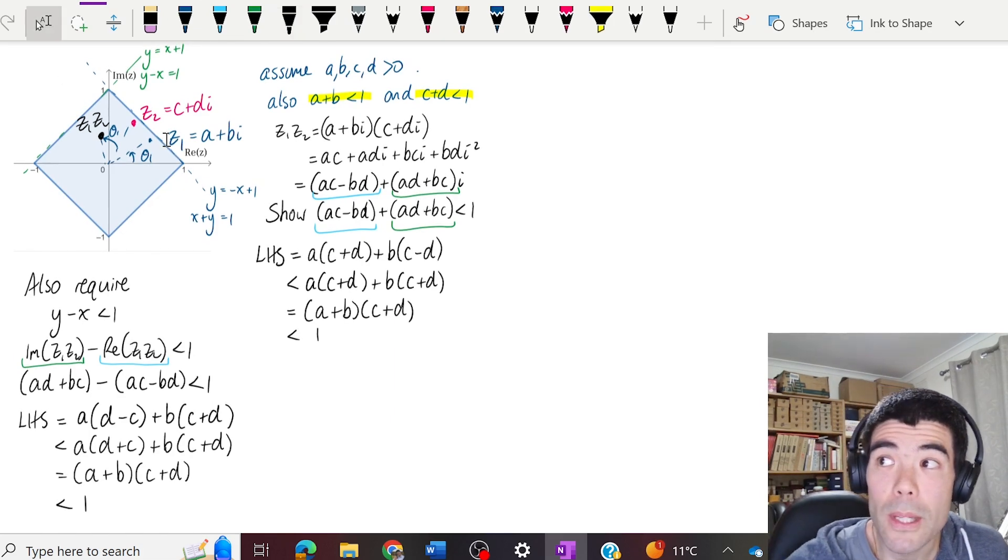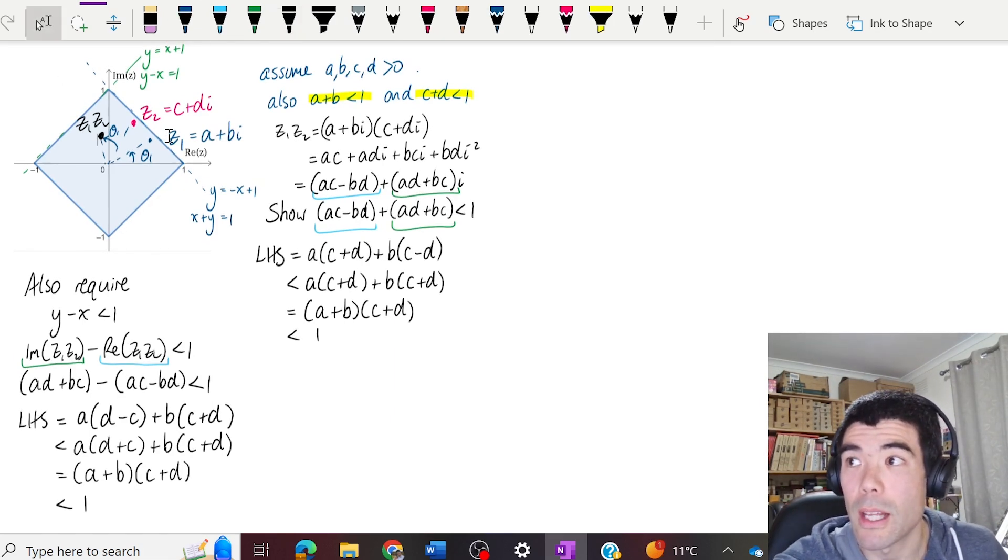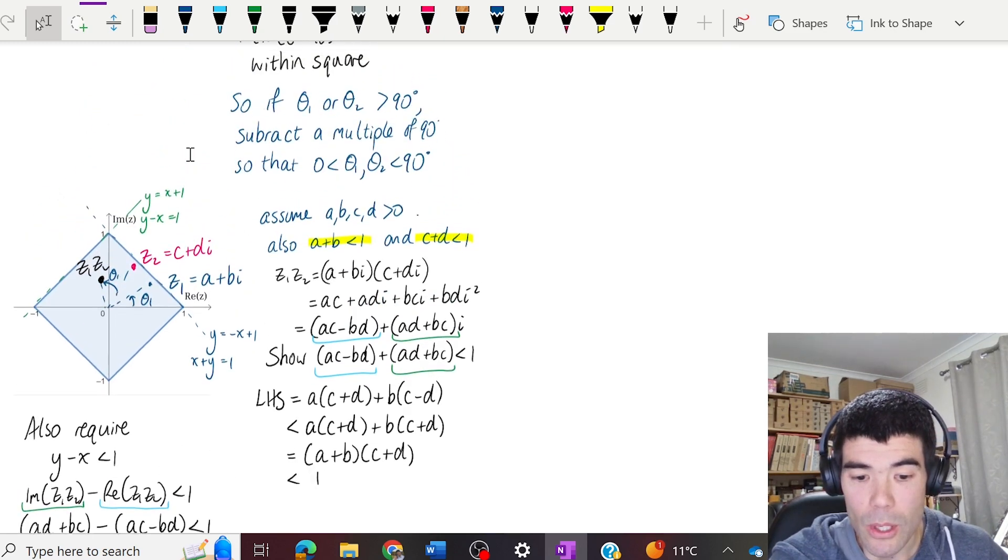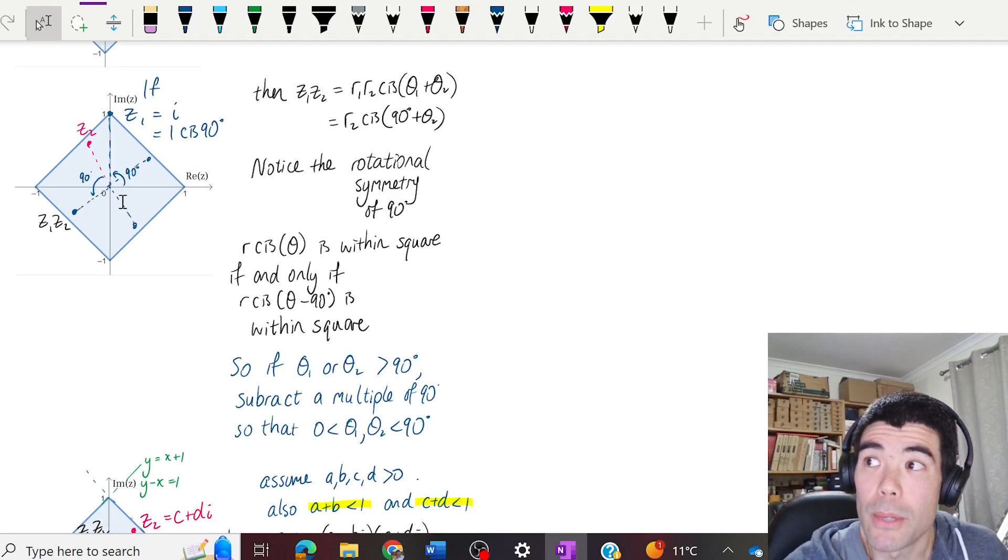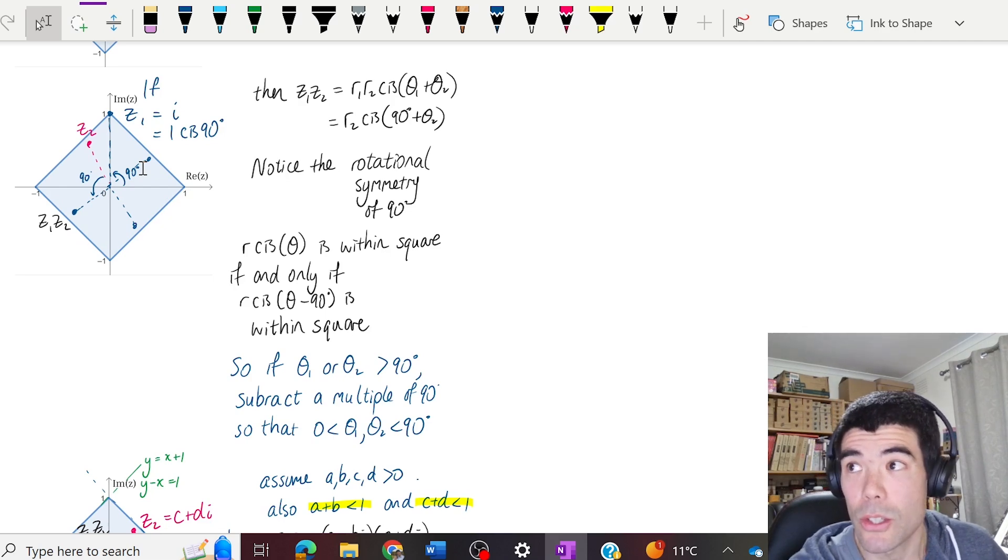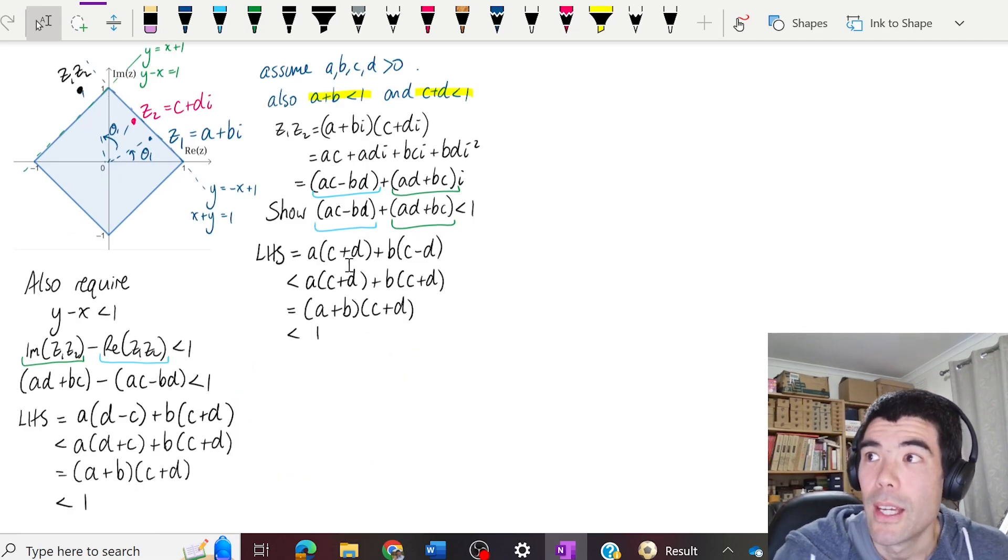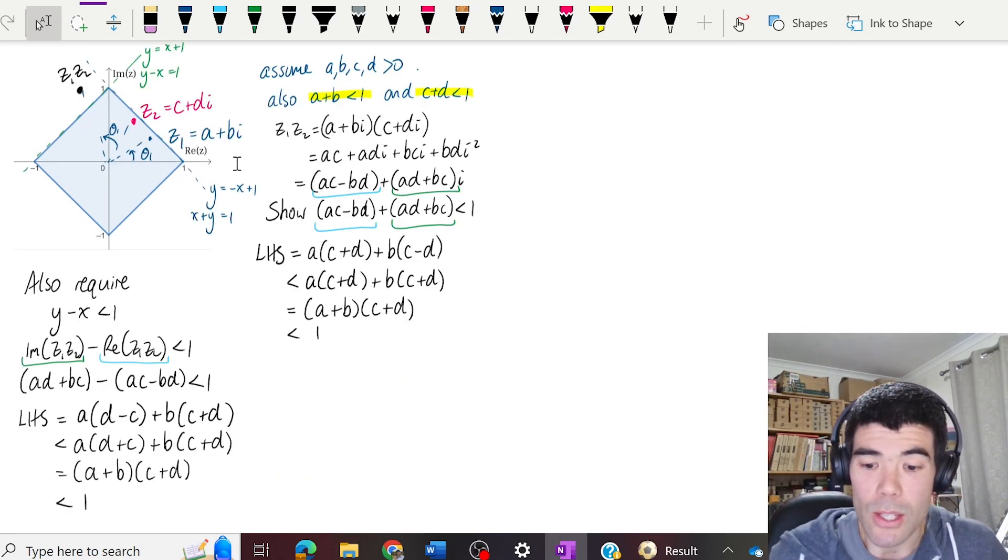So there we are. If the two complex numbers are in the first quadrant, then their product must lie within the square. And together with the observation before about the rotational symmetry, that we can bring any complex number from any quadrant back into the first quadrant by subtracting a multiple of 90 degrees, is enough to prove that the product must be within the square.